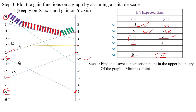Next, find the lowest intersection point in the upper boundary of the graph. The upper boundary has two intersections. Among these two intersections, we identify the lowest intersection point — this is called the minimax point.